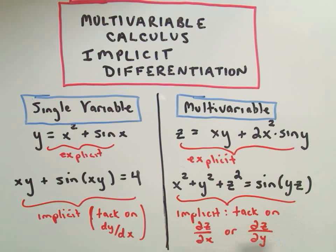And that's considered implicit. So the only thing you have to remember, we can't just talk about derivatives of multivariable functions. We either talk about partial derivatives. So we're either going to take the partial with respect to x or the partial with respect to y. Depending on which one you do, you just tack on the respective, the correct partial derivative.